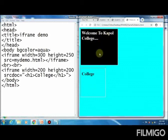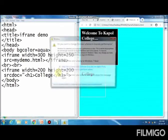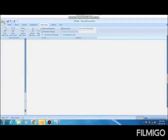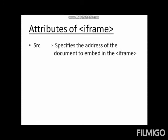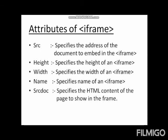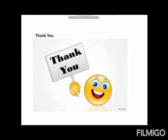The iframe tag is used for inserting multiple web pages on the same window. If you want to add another webpage on the same window, open another iframe tag and you can add multiple web pages. The attributes of the iframe tag are: src, height, width, name, and srcdoc. Hope you understand how to insert multiple web pages on the same window using the iframe tag or the inline frame concept. Thank you.